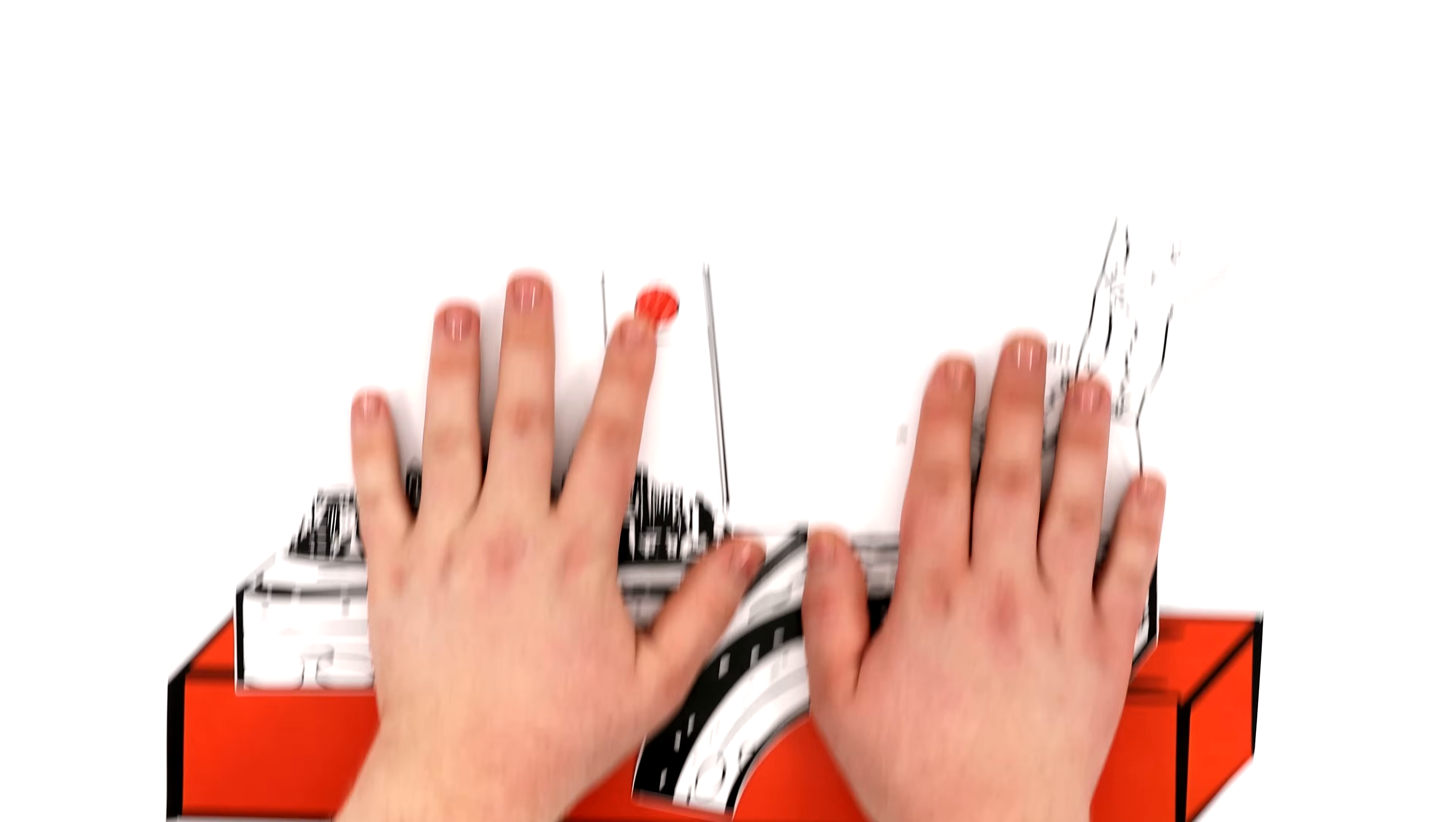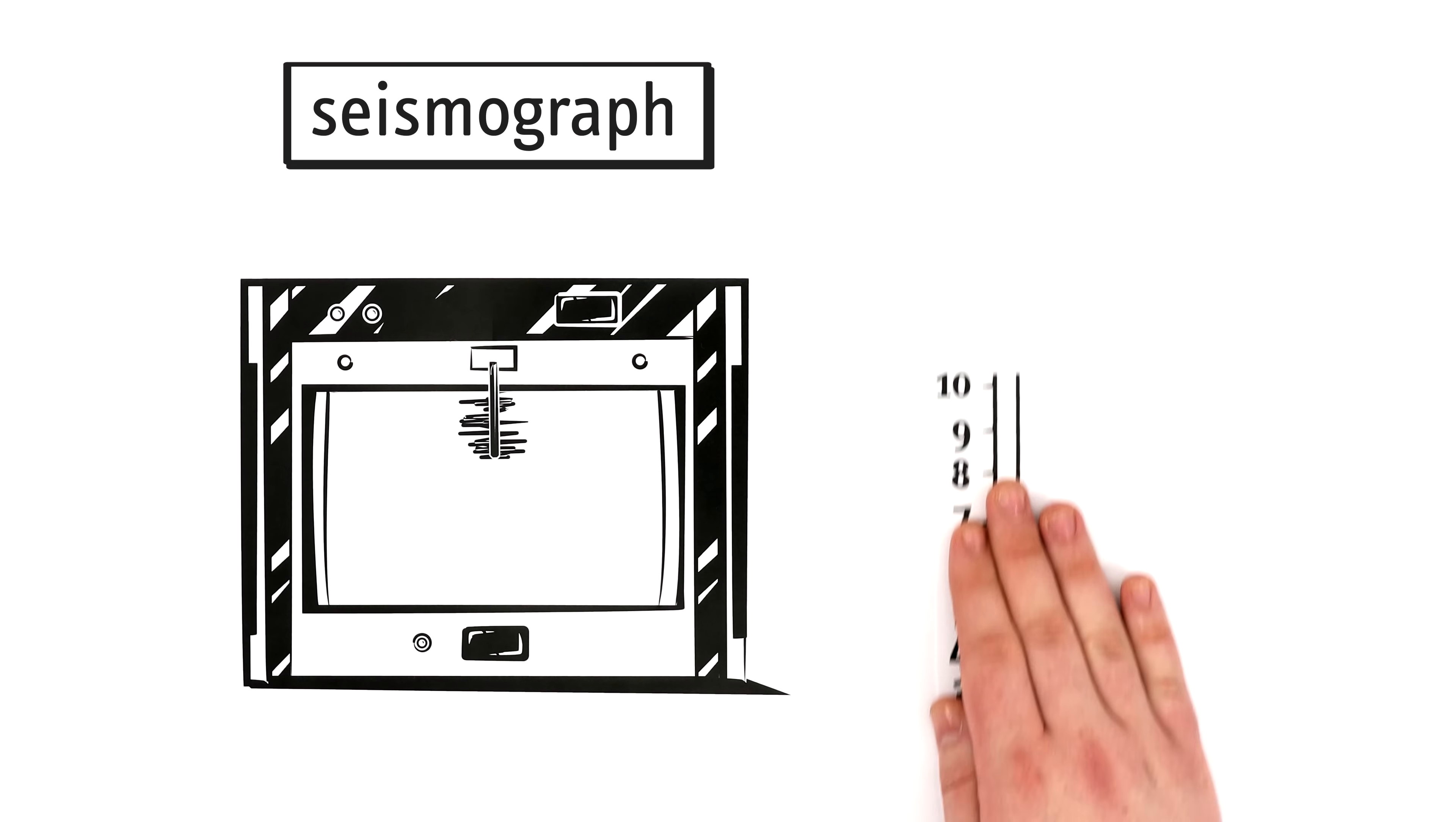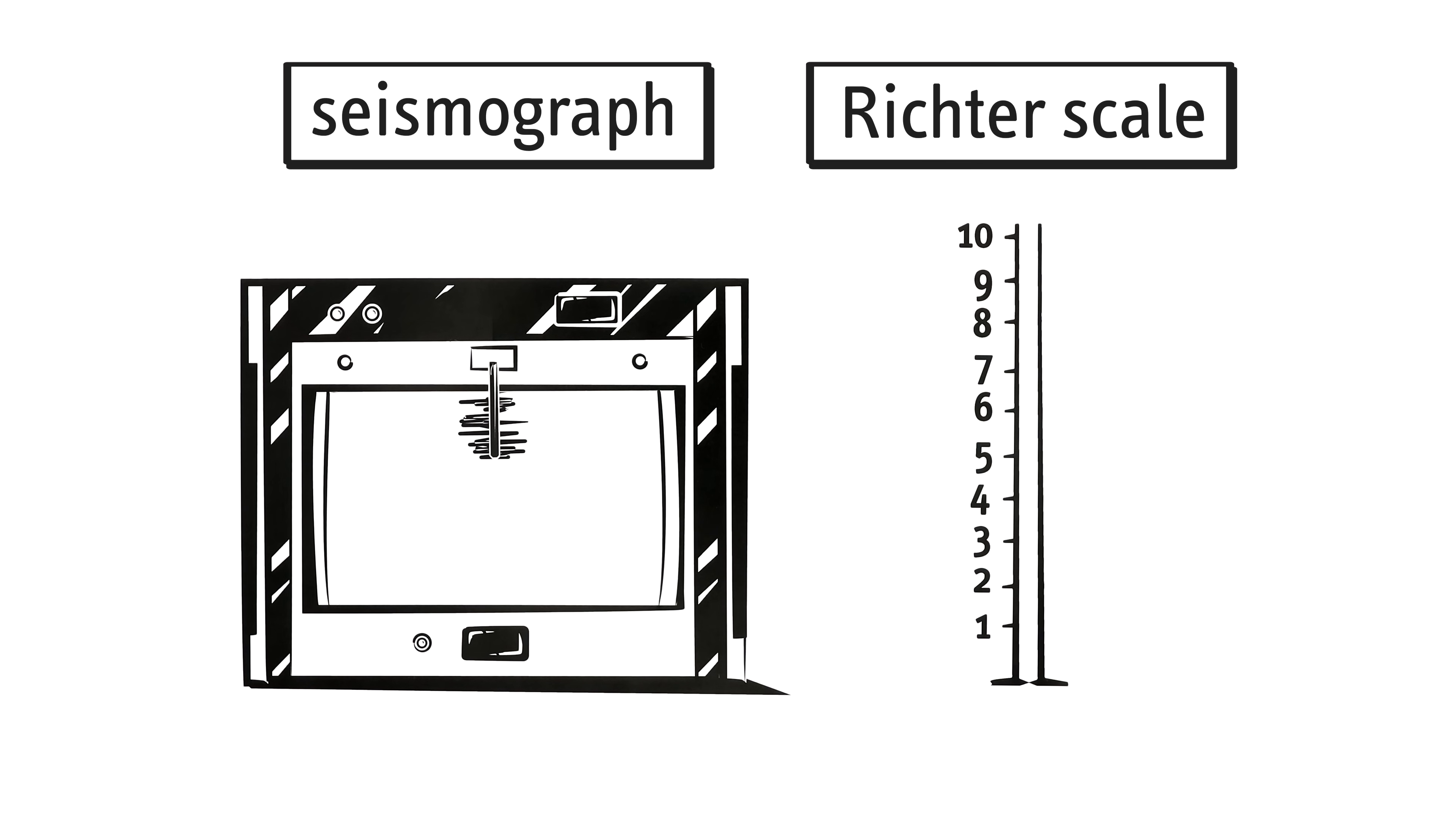The strength of an earthquake is measured with a seismograph. Using the Richter scale, the tremor is then given a level from 1 to 10. Already at level 5, buildings can be damaged. Anything beyond that has huge impacts on the safety of people, homes, and entire regions.